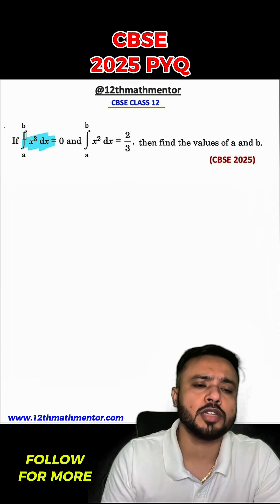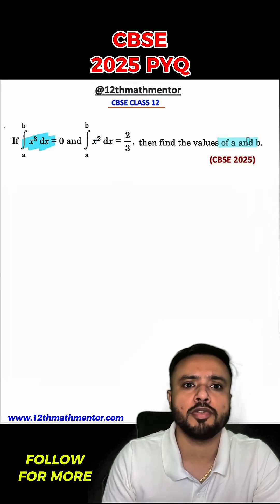So in this question, it is given that integral of x³ dx from a to b is equal to 0 and integral of x² dx from a to b is 2/3, then we have to find the value of a and b.